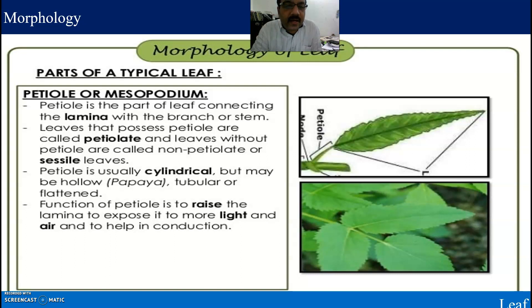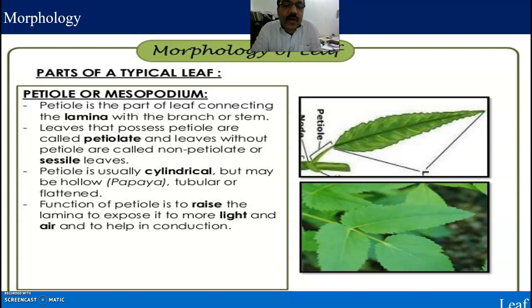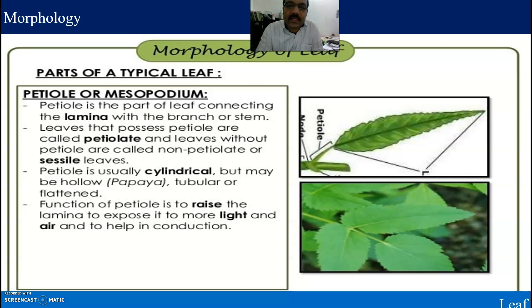The petiole is usually cylindrical but may be hollow, tubular, or flattened. The function of the petiole is to raise the lamina to expose it to more light and air and to help in conduction.